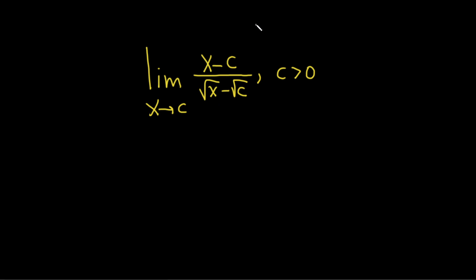If you do that, you're going to end up with the square root of c minus the square root of c on the bottom, and that's going to give us 0. That's not very good because we are not allowed to have 0 on the bottom.